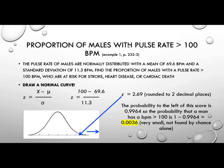Let's take a look at an example. We have the proportion of males with a pulse rate greater than 100 beats per minute. We're looking at example 1 on page 232. So the pulse rate of males are normally distributed with a mean of 69.6 BPM and a standard deviation of 11.3 BPM. Find the proportion of males with a pulse rate that's greater than 100 beats per minute who are at risk for stroke, heart disease, or cardiac death. We're going to draw our normal curve, right? We're going to look at our Z-score formula, and the things that we have are over here. We're looking for the Z-score. So let's plug in chug. We know that we're looking for a score of 100 minus the population mean, which is 69.6, divided by the standard deviation, which was given at 11.3. We do this calculation and we find a Z-score of 2.69. We just round.